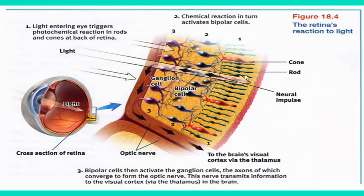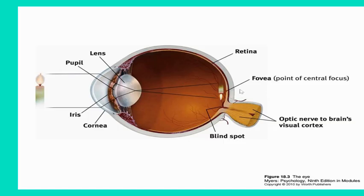We have cones and rods on the eye. Cones allow us to see color and rods allow us to see black and white. In the fovea, there is a concentration of cones — only cones. As you go on the outside of the retina, that's where you'll find the rods. So the fovea is just a cluster of cones, and outside of that are our rods.